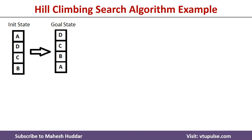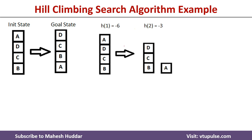In the simple hill climbing algorithm, whenever we consider the initial state, we check whether it is a goal state or not — if it is, we stop. Since the initial state is not a goal state, we apply one operator. The only possibility is to move a onto the ground, giving a new state. The heuristic value of the initial state was minus 6, and the heuristic value of this new state becomes minus 3.